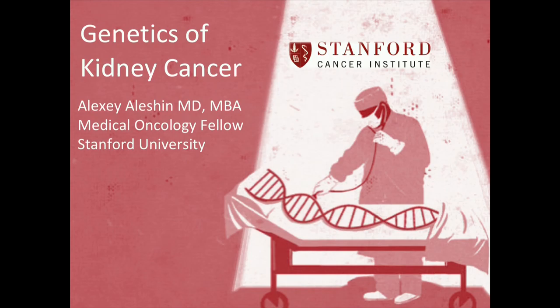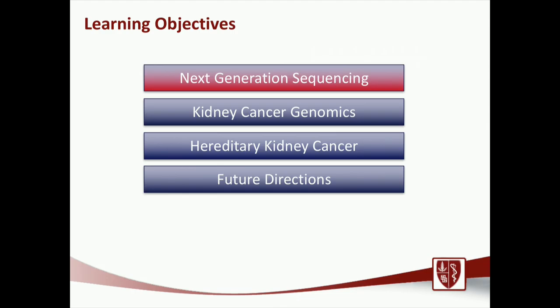I want to spend a little bit of time speaking about the genetics of kidney cancer. The learning objectives for today are: what is next generation sequencing and how is it helping facilitate some of the new advances in the genomics and genetics of kidney cancer? We'll also spend time talking about kidney cancer genomics, hereditary kidney cancer syndromes, and future directions in this field.